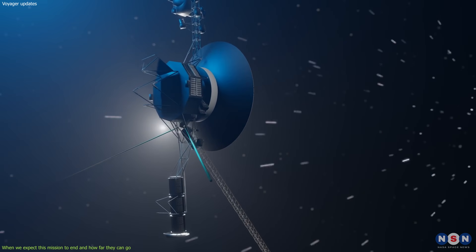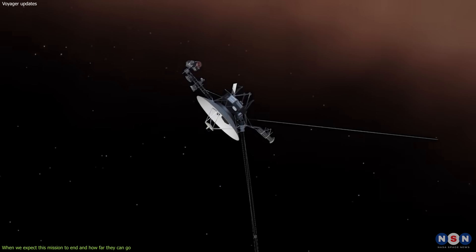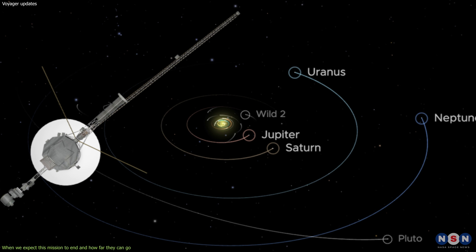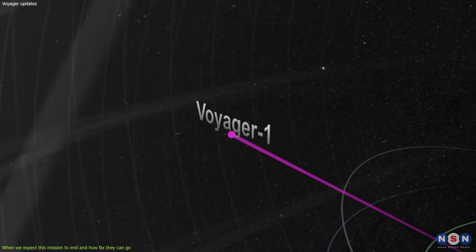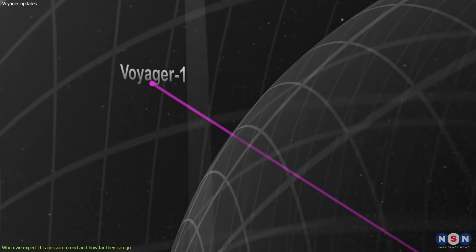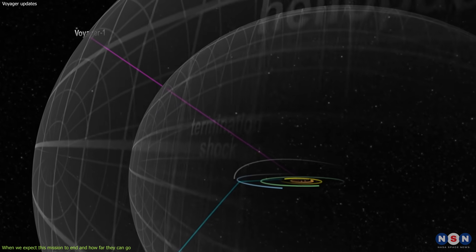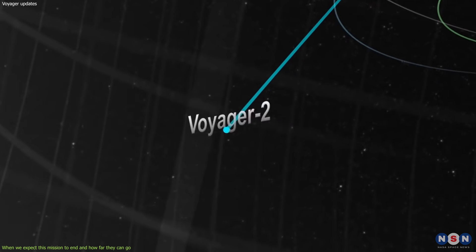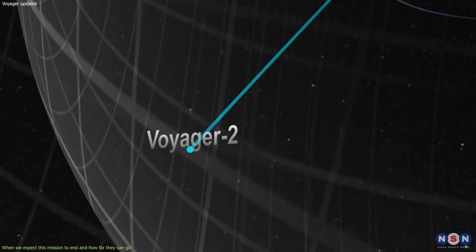But until then, how far will they travel? How far have they traveled so far? They have traveled farther than any other human-made objects in space. As of October 2023, Voyager 1 is about 23 billion kilometers away from Earth, while Voyager 2 is about 19 billion kilometers away from Earth.